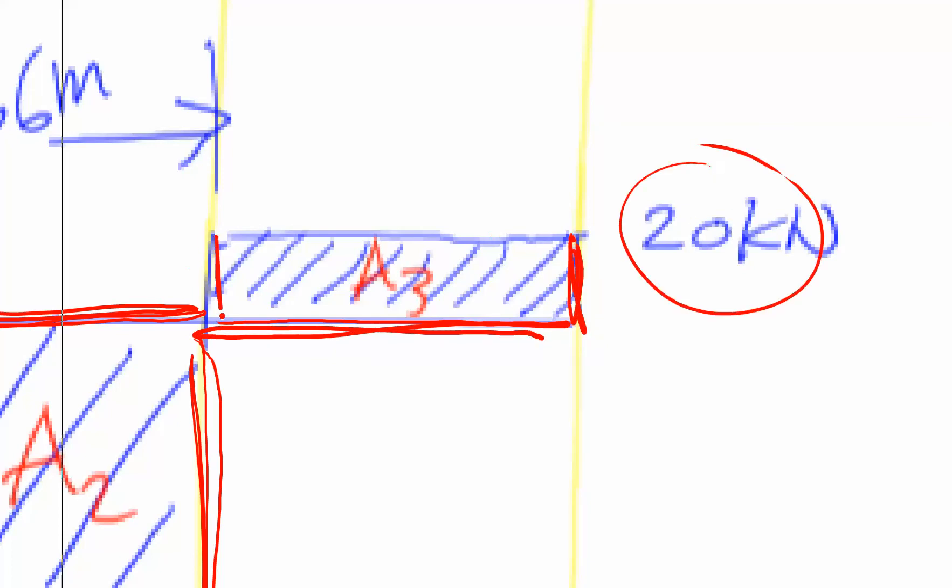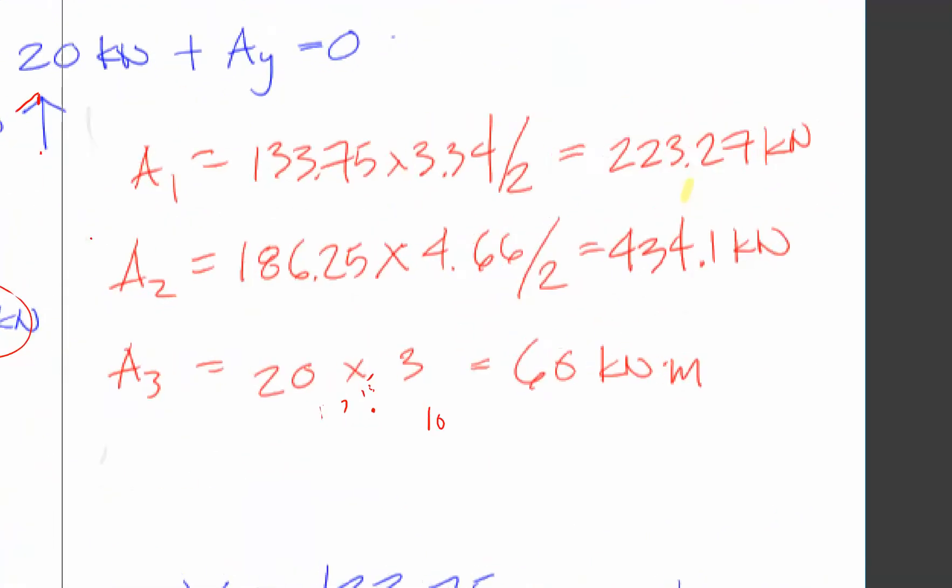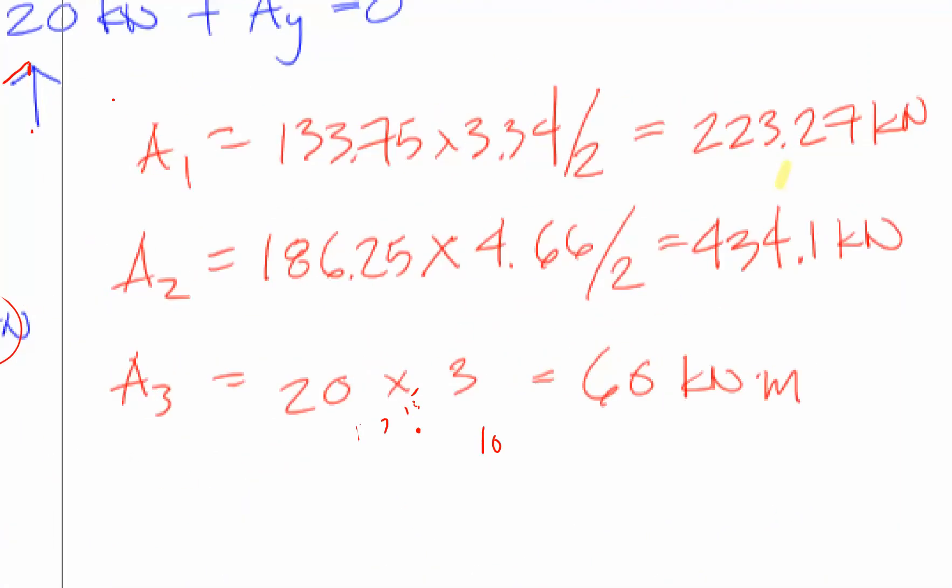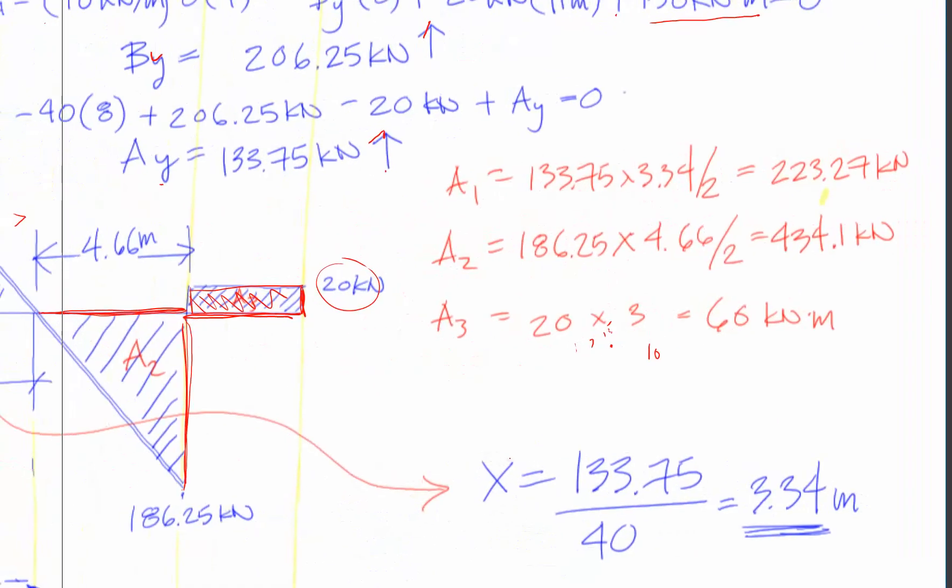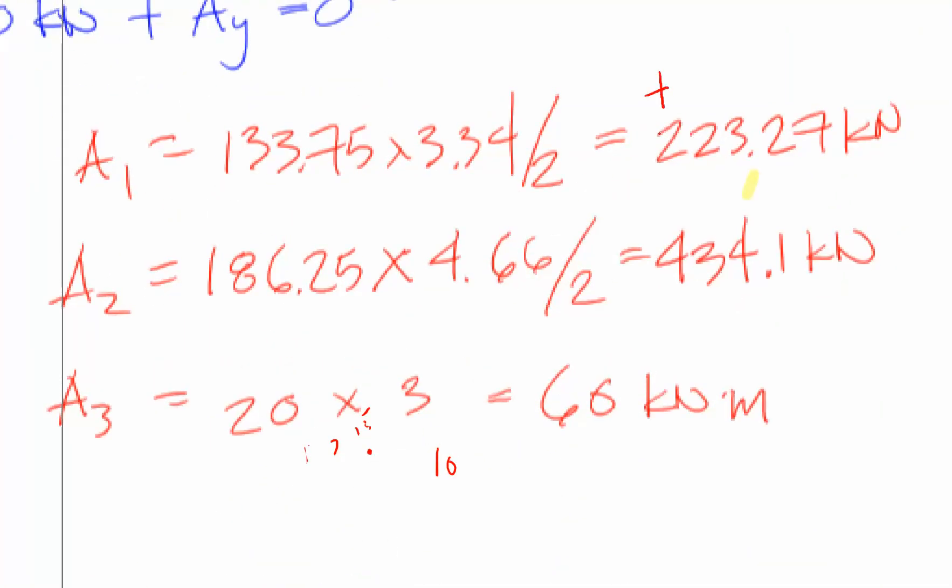Finally, we have a rectangle, and the formula for that is base times height. What is our base? Whatever that dimension is. And what is the height? 20. I labeled it as A1, A2, A3. To have it more accurately and correctly, I should have said that this is positive, this is negative, and this is positive.